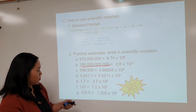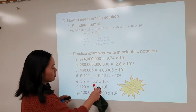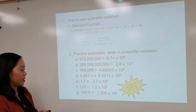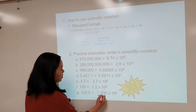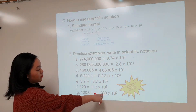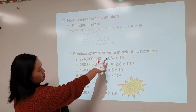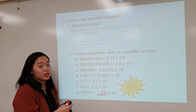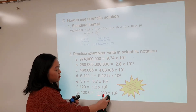Now here's a big question: why does only one of these have zeros in the scientific notation? Notice how for that one, the first part of the number has a zero in it, but none of the others do. That's because zeros have their own rules. Let's take a look at what the rules for zeros are.